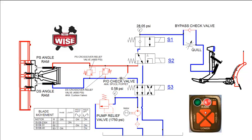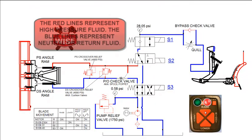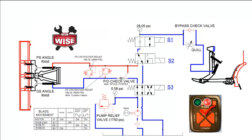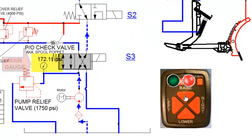Hydraulic pumps produce flow, not pressure. It is not until flow from the pump is restricted that pressure starts to build. Therefore, pressure in a hydraulic system comes from resistance to flow. In the raised circuit, the primary resistance to flow is the weight of the plow. Watch the pressure climb on the main gauge as we slowly raise the plow. Note that the pump relief valve is set to 1750 psi.